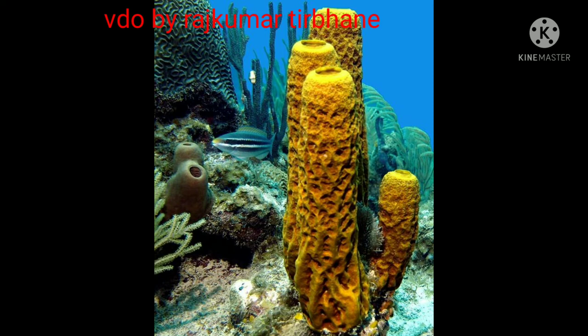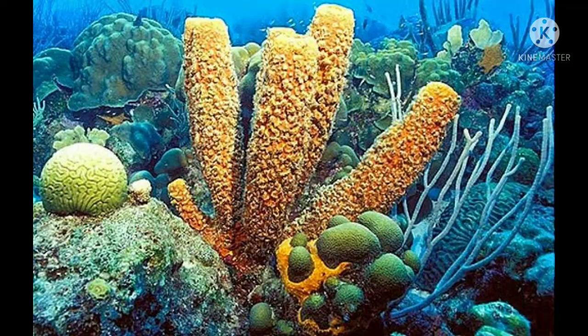They are commonly called sponges and are mainly found in marine habitats — marine means sea water. Some examples are Spongilla, Euplectella, and Sycon sponge.